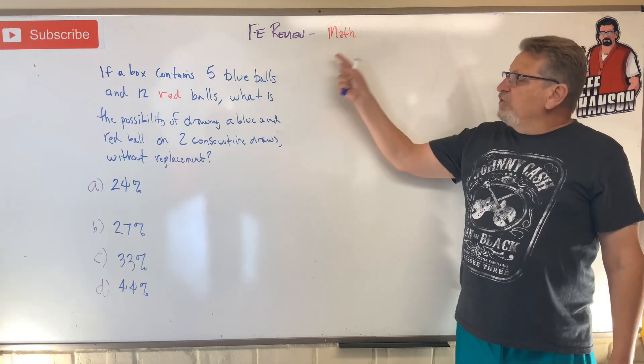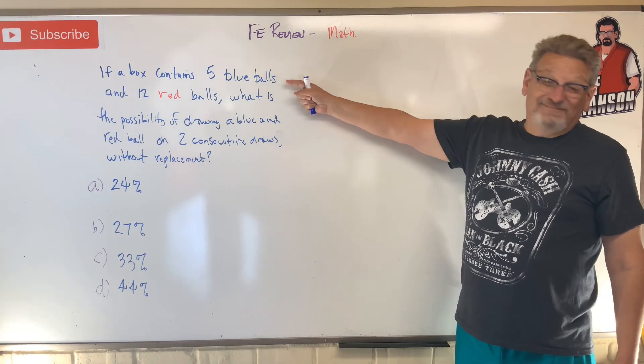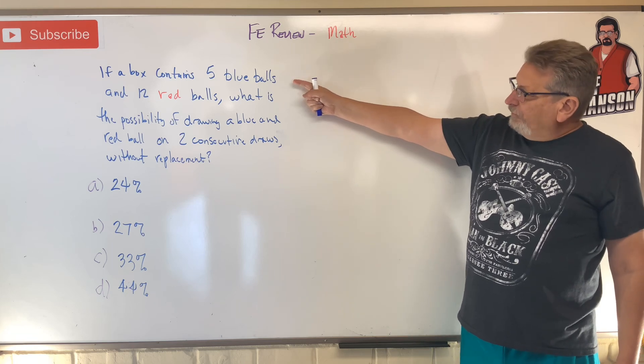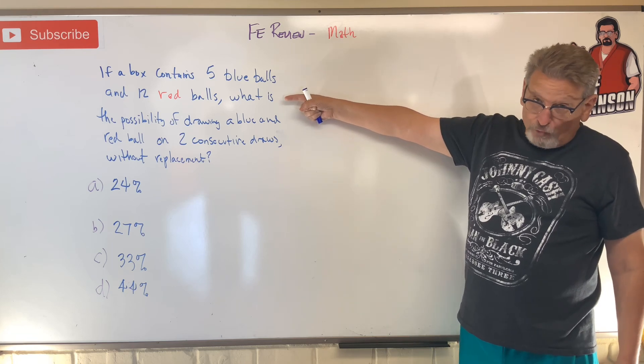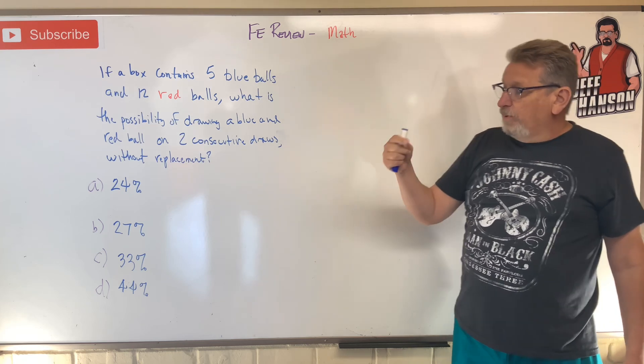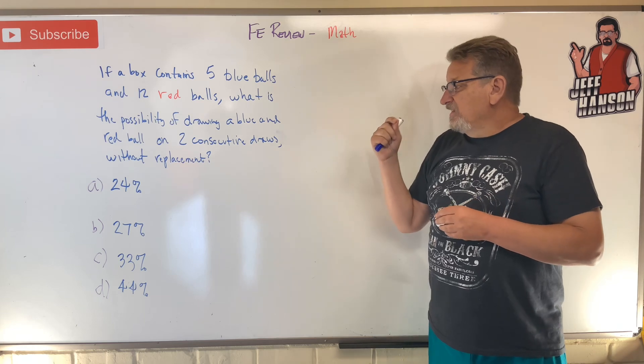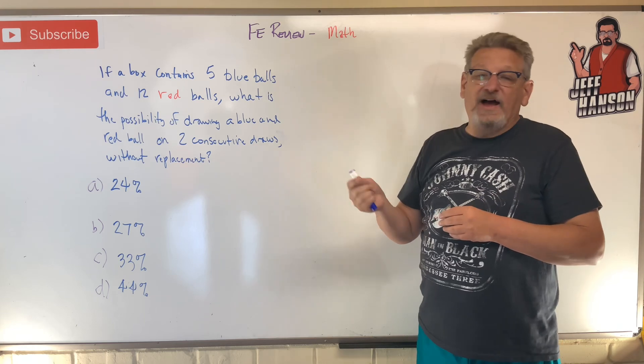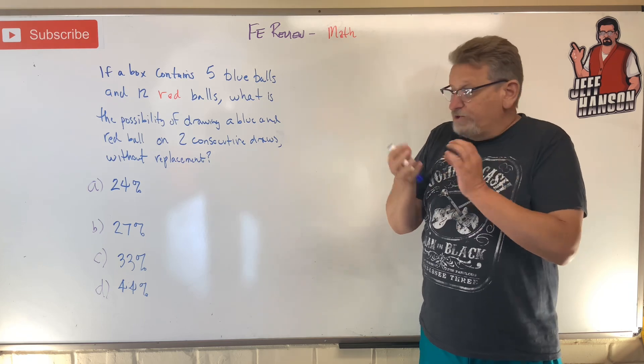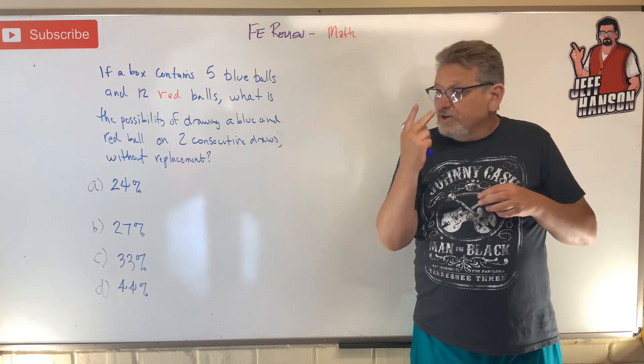Hey gang, welcome back. FE review problem, math statistics. If a box contains five blue balls and 12 red balls, what is the possibility of drawing a blue ball and a red ball on two consecutive draws without replacement? So you can draw a blue or red, or red and a blue, but you get one of each on two consecutive draws.